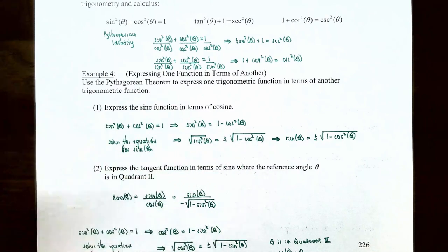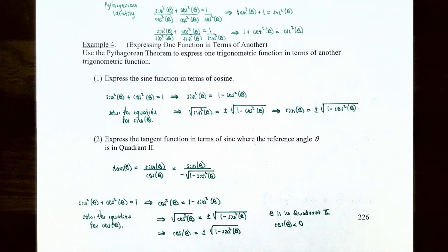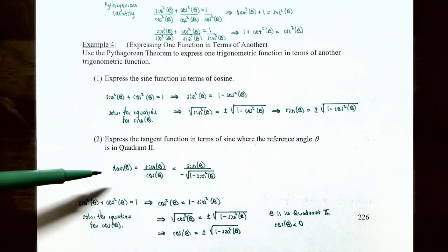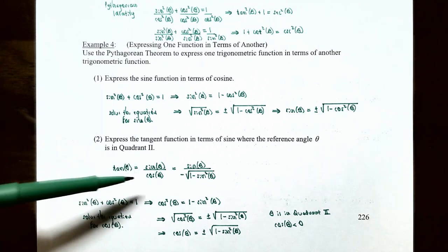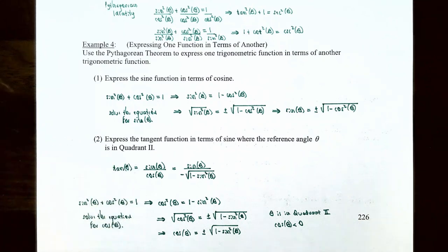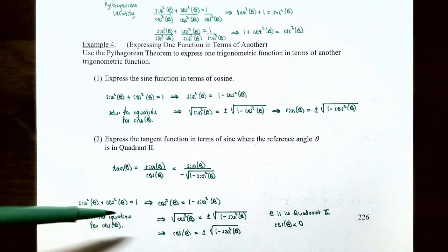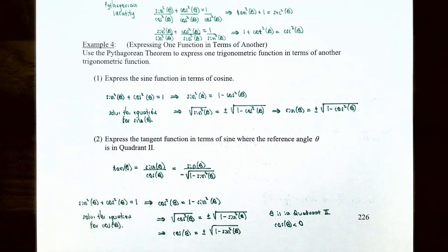In part two, we use the result from part one to help us. Express the tangent function in terms of the sine function where the reference angle theta is in quadrant two. The tangent function is the ratio of sine of theta divided by cosine of theta. We want to rewrite tangent in terms of the sine function, so we need to replace the cosine function to also be in terms of the sine function. So let's use the Pythagorean identity again.